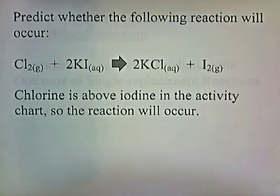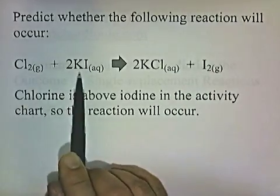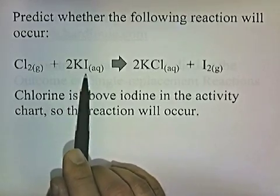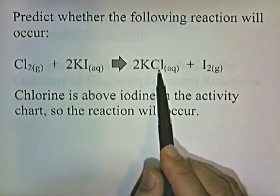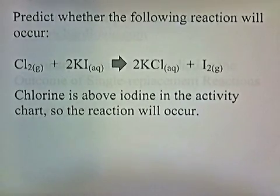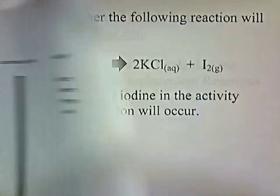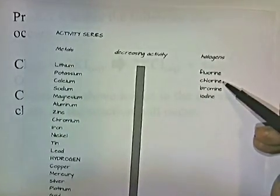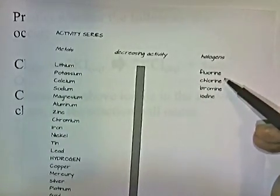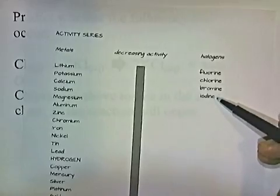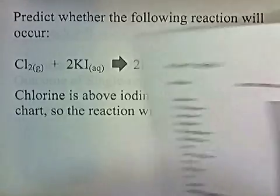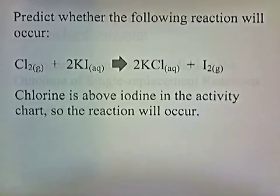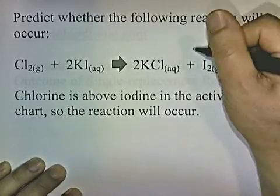Predict whether the following reaction will occur: chlorine gas being bubbled through a potassium iodide solution — will potassium chloride and iodine gas be produced? Chlorine is above iodine on the activity chart. Since chlorine is above iodine, the reaction will occur.